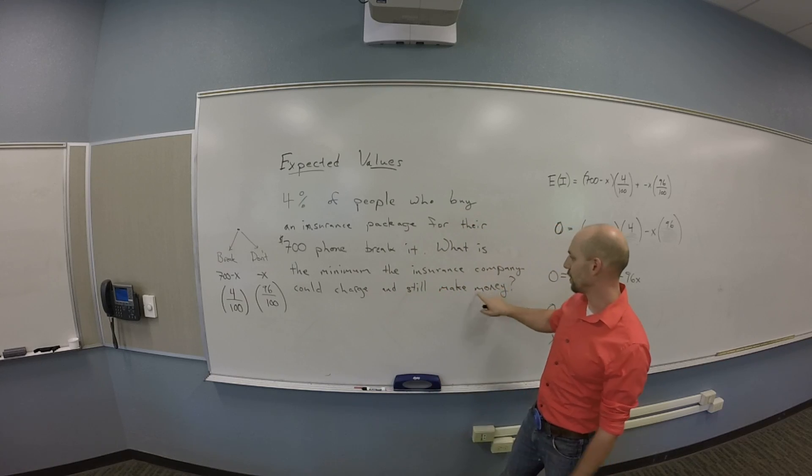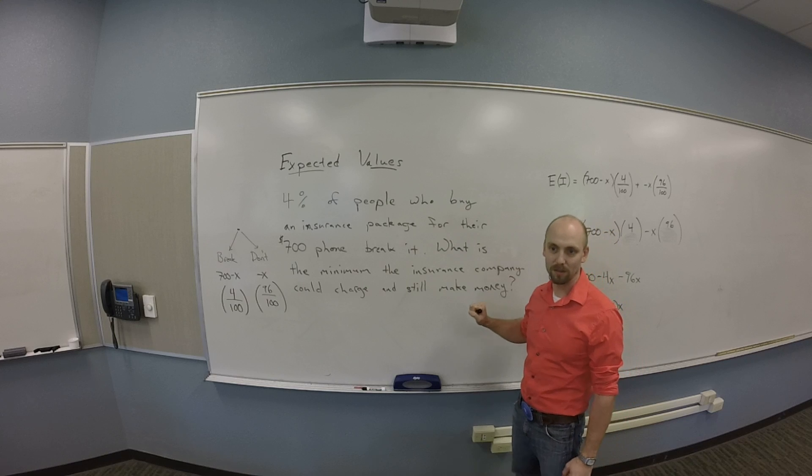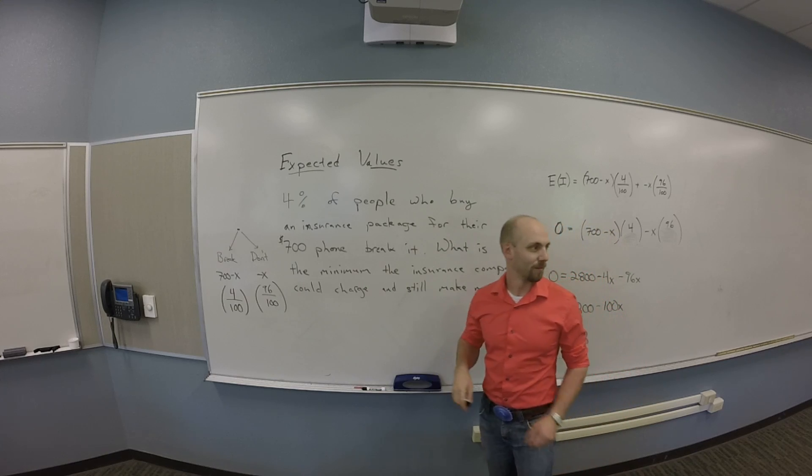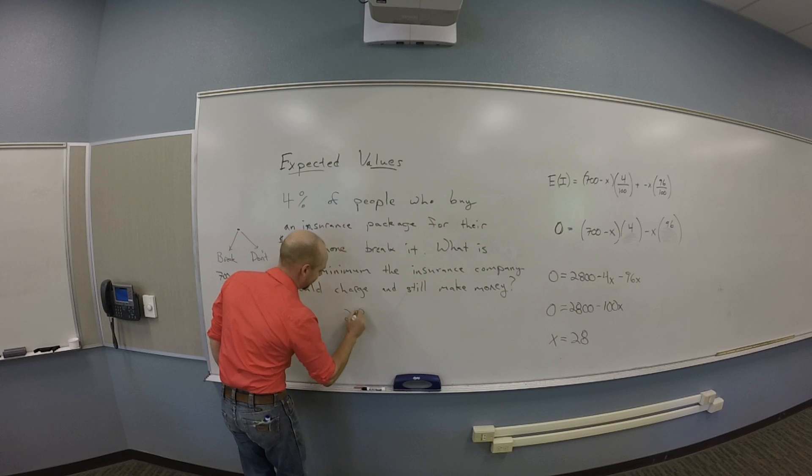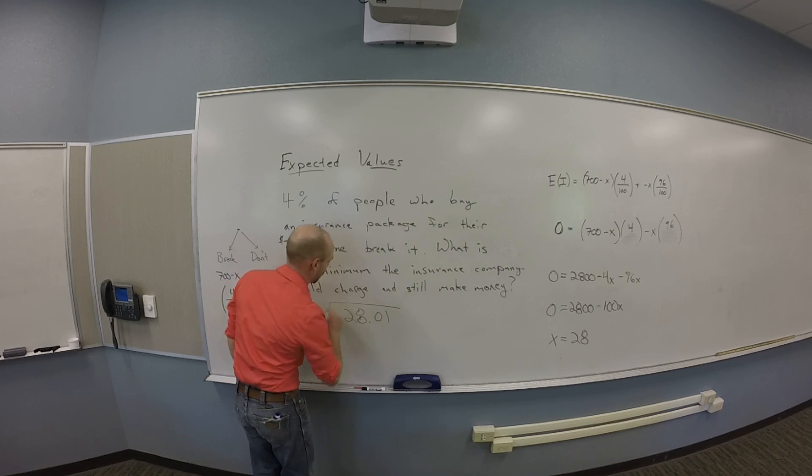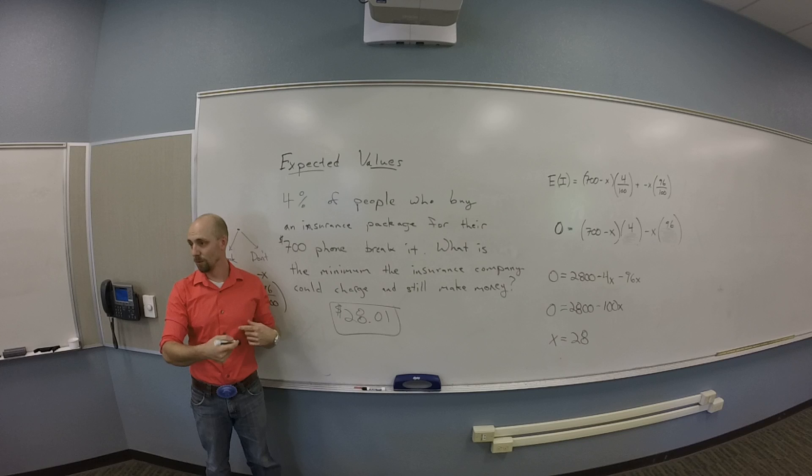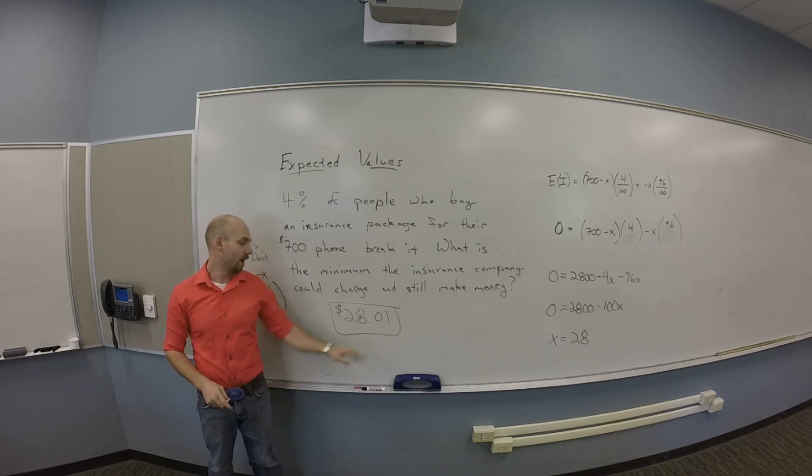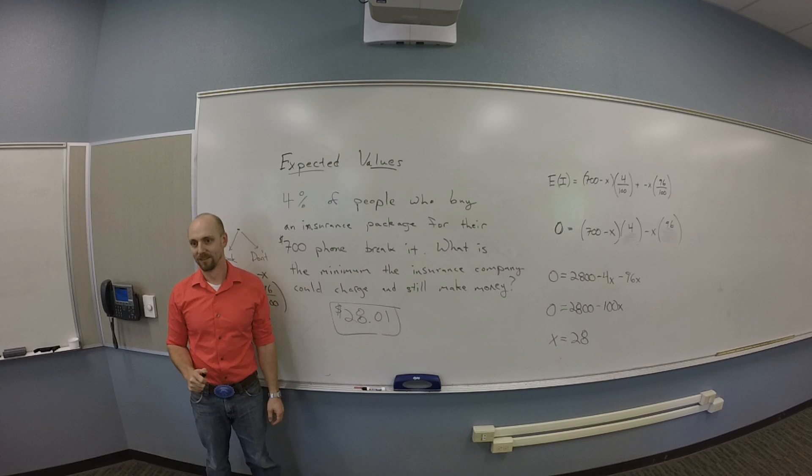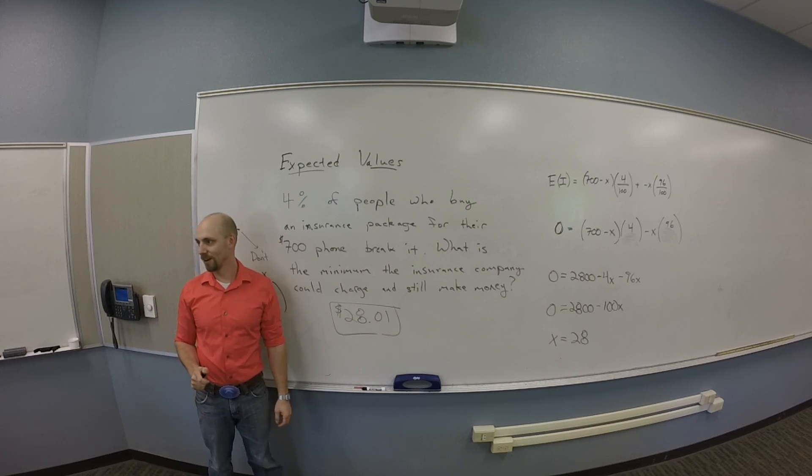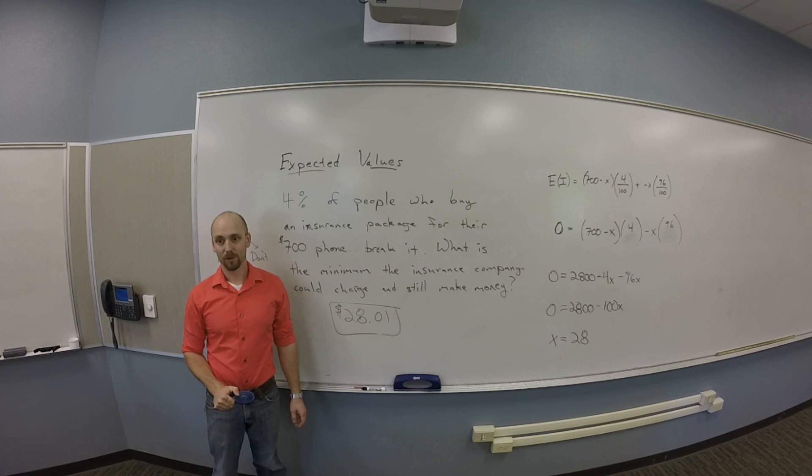So what's the minimum the insurance company could charge and still make money? Twenty-eight dollars and one cent. Since we don't have denominations in money smaller than that anymore. Any amount bigger than this will be profit. So right now, at this level, they're making a penny per plan. That is not a great deal of profit, probably, unless you're selling a lot of the plan.